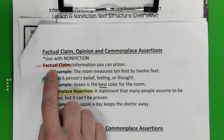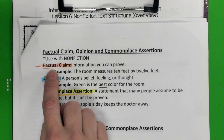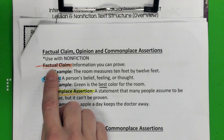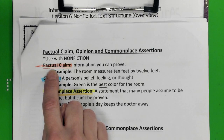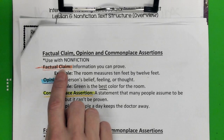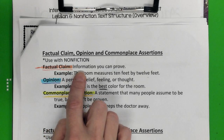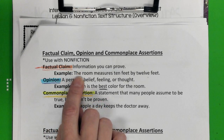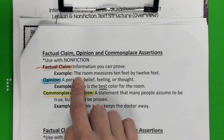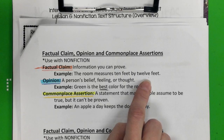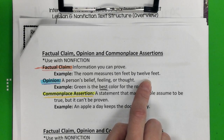A factual claim is information you can prove. I can go to a book or a credible source on the internet — and I said credible. I'm not going to Wikipedia or Facebook or any type of social media for a factual claim, because that information is not always true. I'm going to a credible source to prove it. For example, the room measures 10 feet by 12 feet — we could go to that room, take a tape measure, and actually measure it. We can prove that.